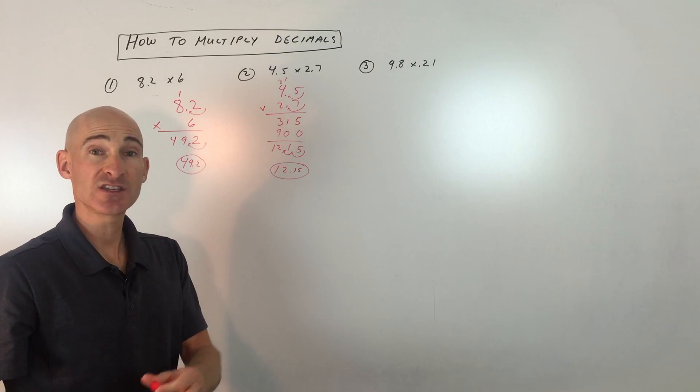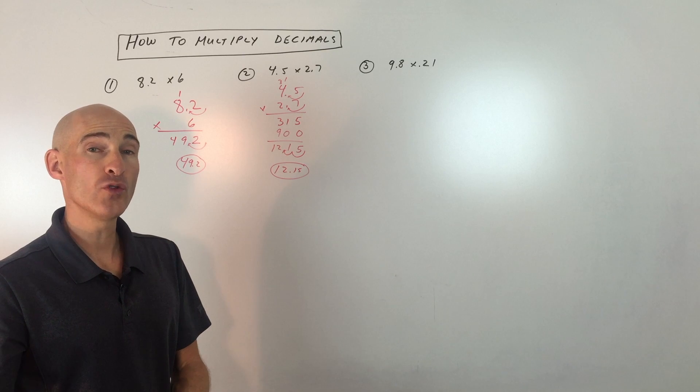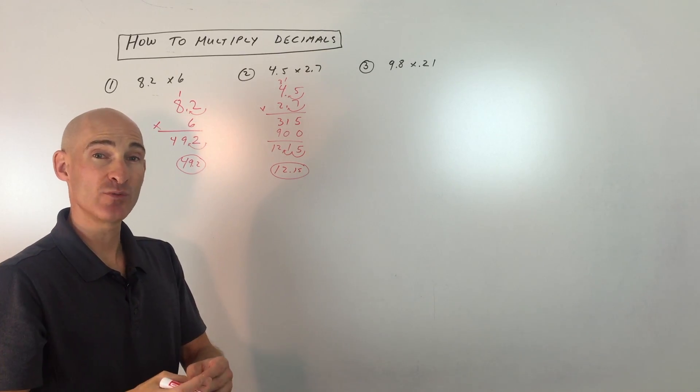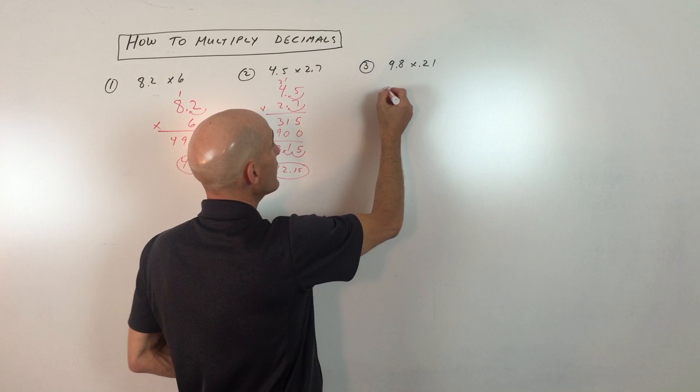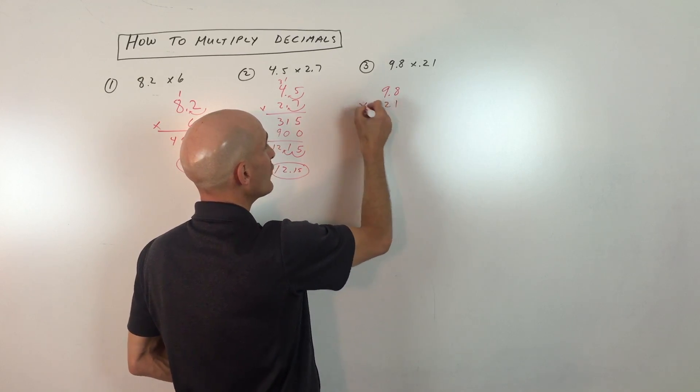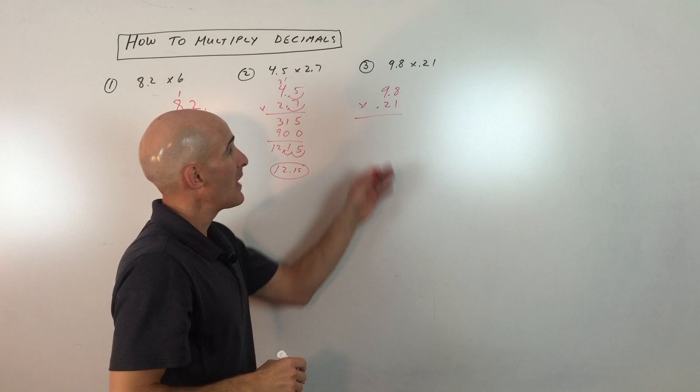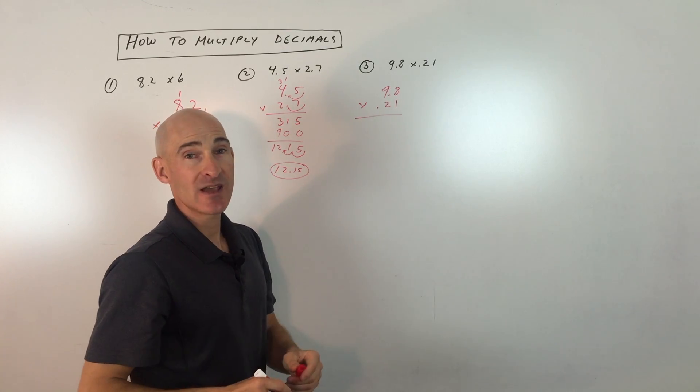So are you getting how easy this is? It's really just like multiplying two whole numbers and then counting the number of decimal places. You just kind of ignore the decimal points. Let's look at one last example, 9.8 times 0.21. I'm just thinking in my mind, this is 98 times 21.